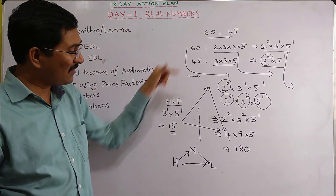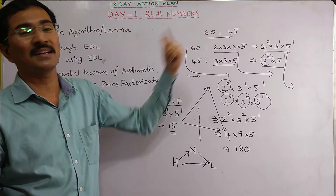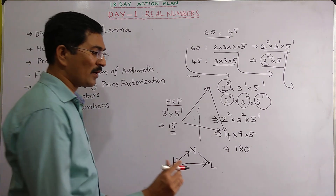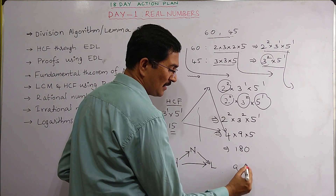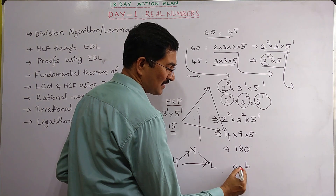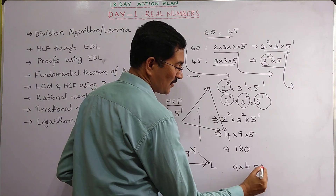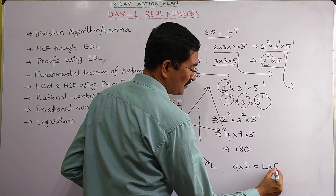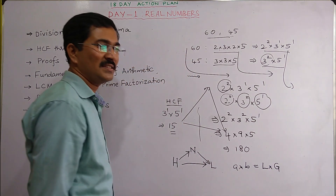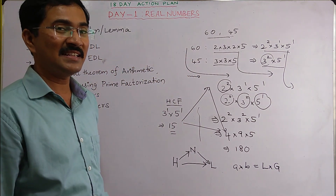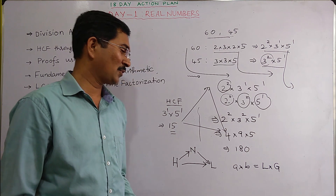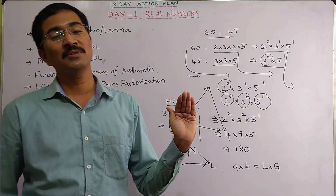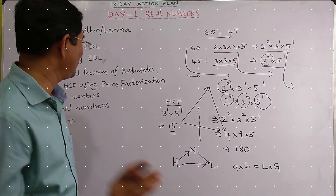We also have one important relationship: if a and b are two numbers, their product a×b equals the product of LCM and HCF (also called GCD). So a×b = LCM × HCF. This relationship can sometimes be useful, so please remember it.